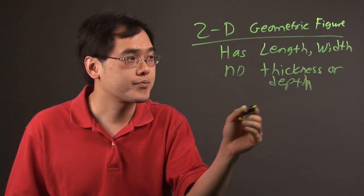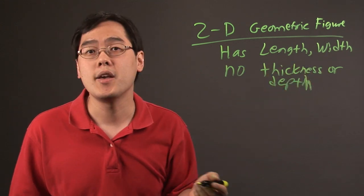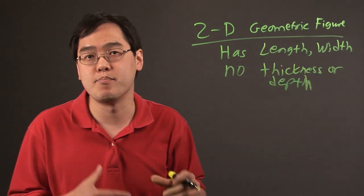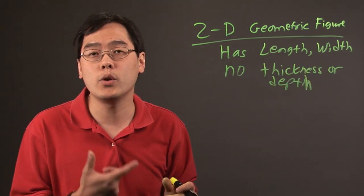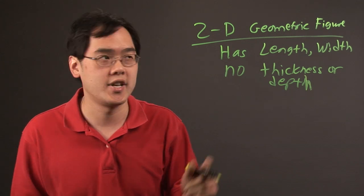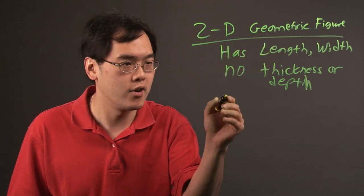Length and width can be rewritten depending on the context as base, height, etc. But only when two dimensions are displayed at any one time, you have a two-dimensional geometric figure.